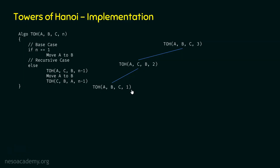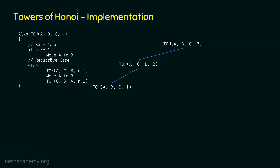Since the base case is satisfied within TOH(A,B,C,1), we need to move 1 disk from A to B. So the first move we write is A to B. This indicates we move 1 disk from peg A to peg B. After completion of this move, we get back to the caller of this function.